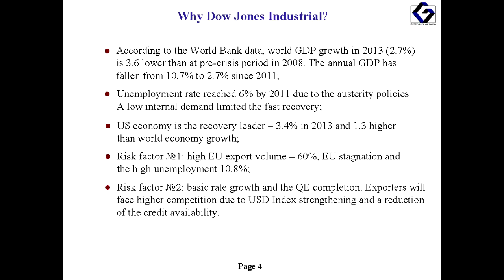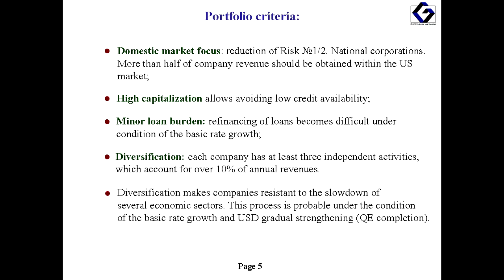That is why it is recommended that the choice of your market engine should be handled with utmost care. US markets show the highest recovery rates: 3.4% while the global rate is 2.7%. Austerity policies introduced in several countries of the European Union have resulted in a high unemployment rate of 11% in 2013. The European Union is the closest US partner, providing more than 60% of exports. The second jeopardy is the QE completion, which leads to US currency strengthening. Major exporters are the first ones to be affected.